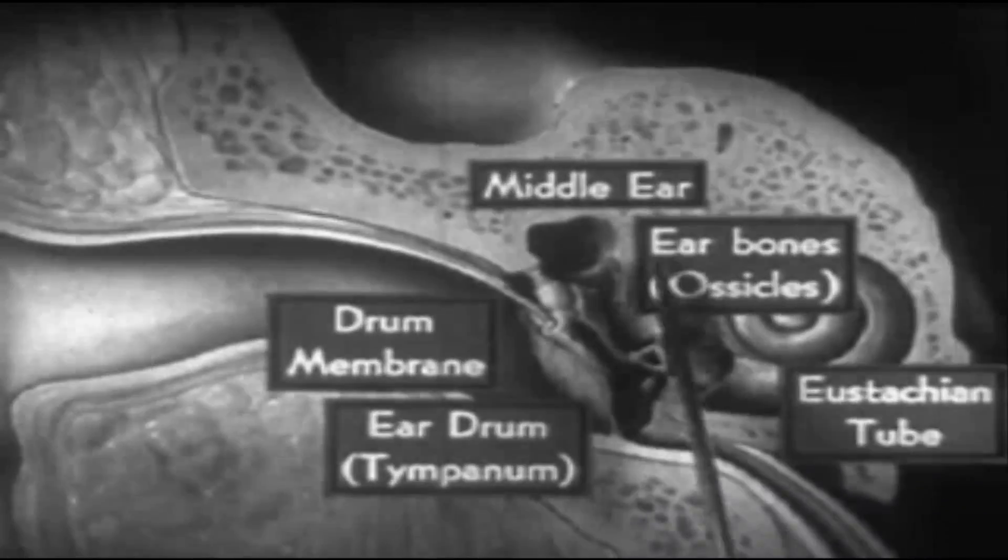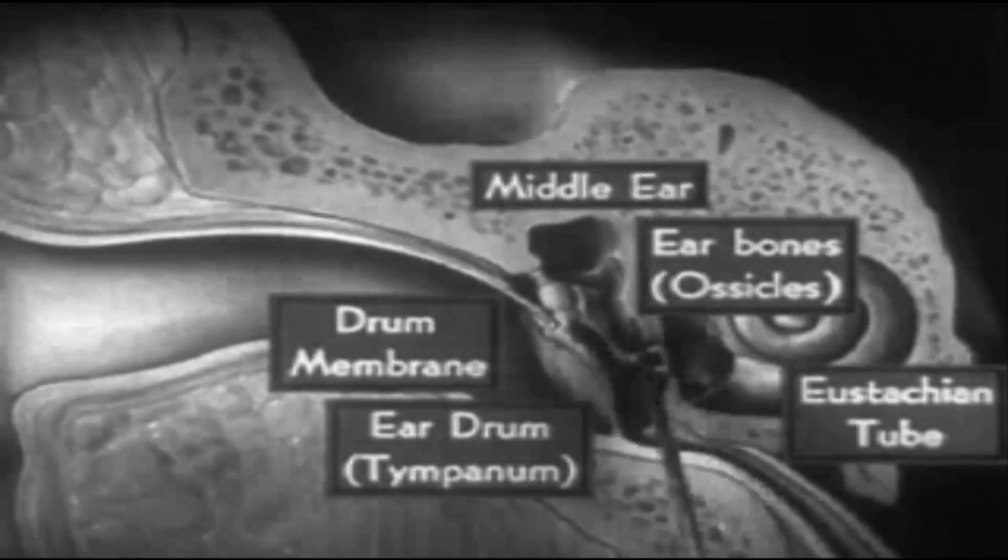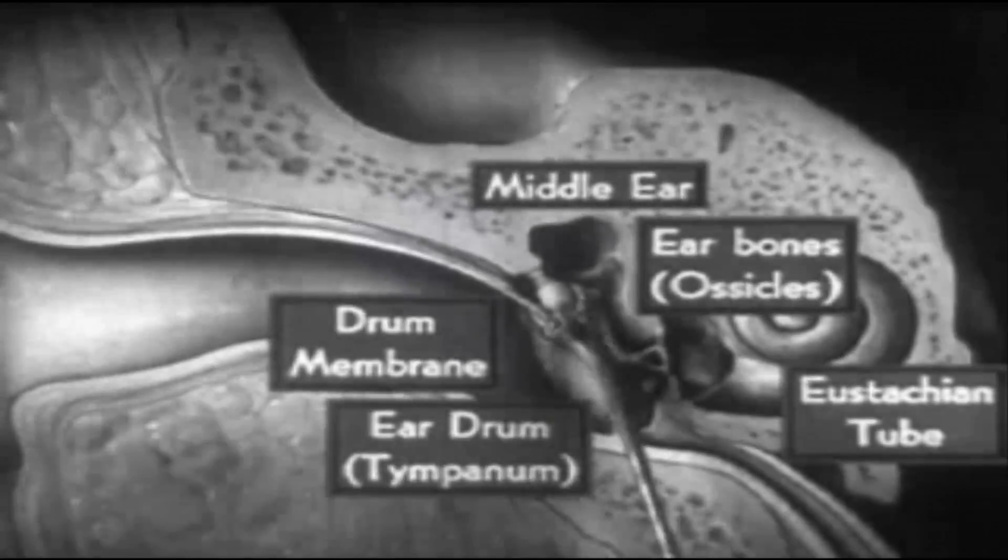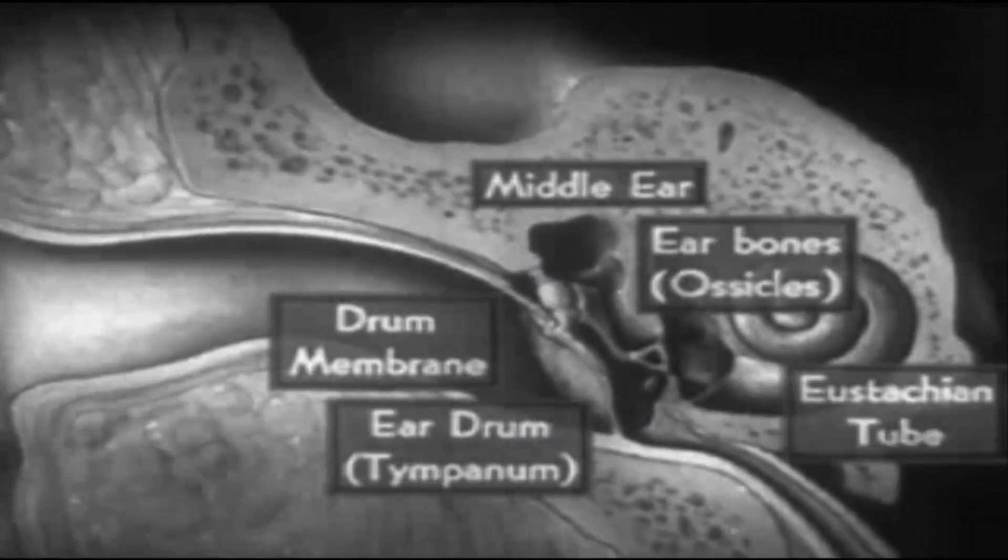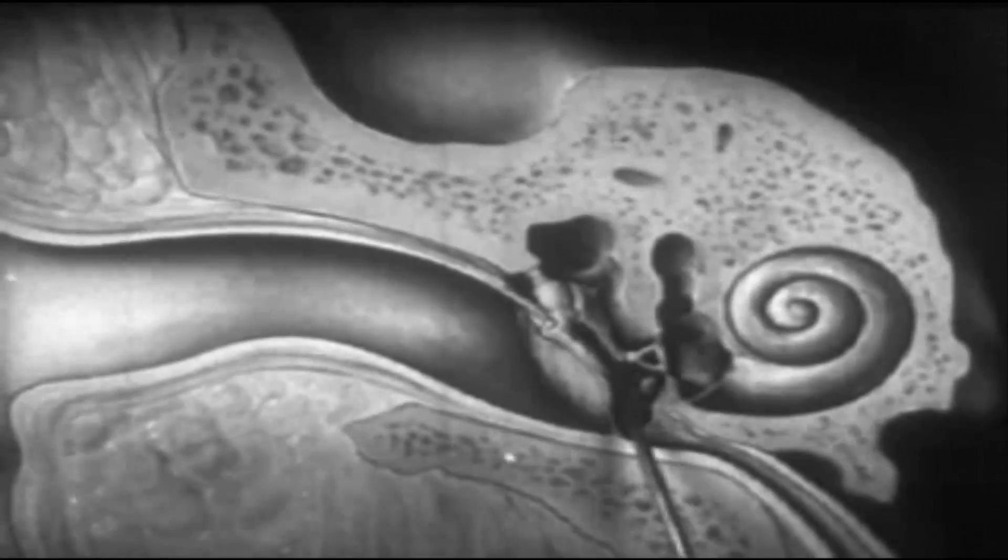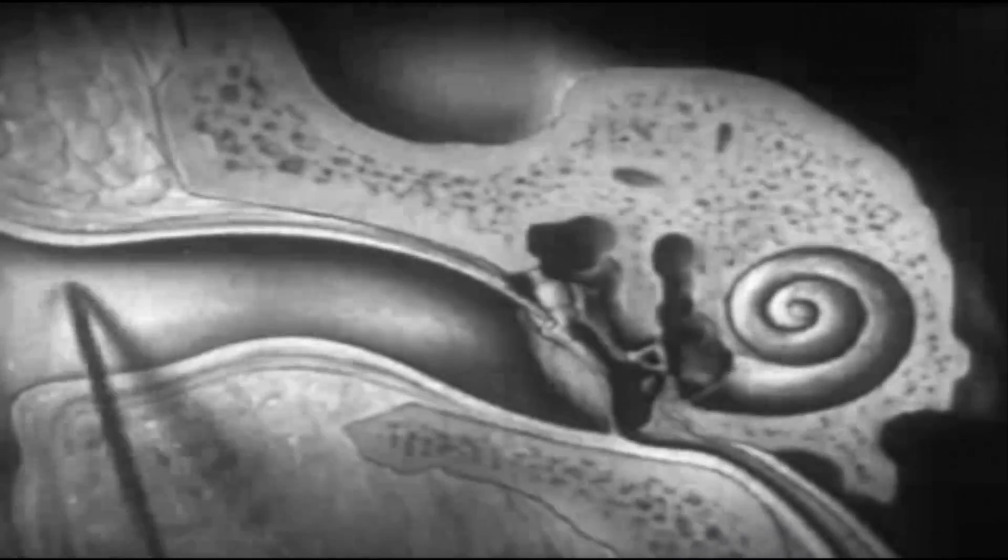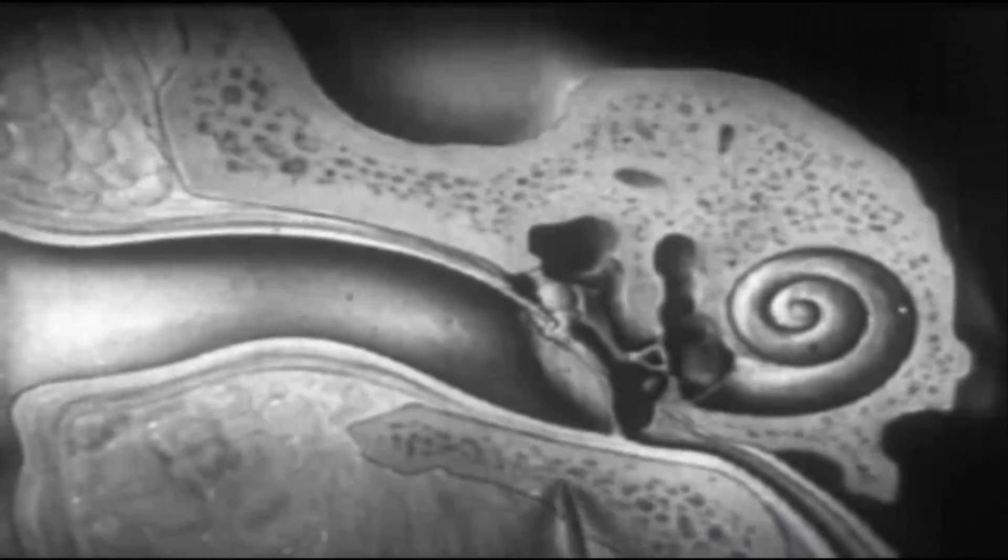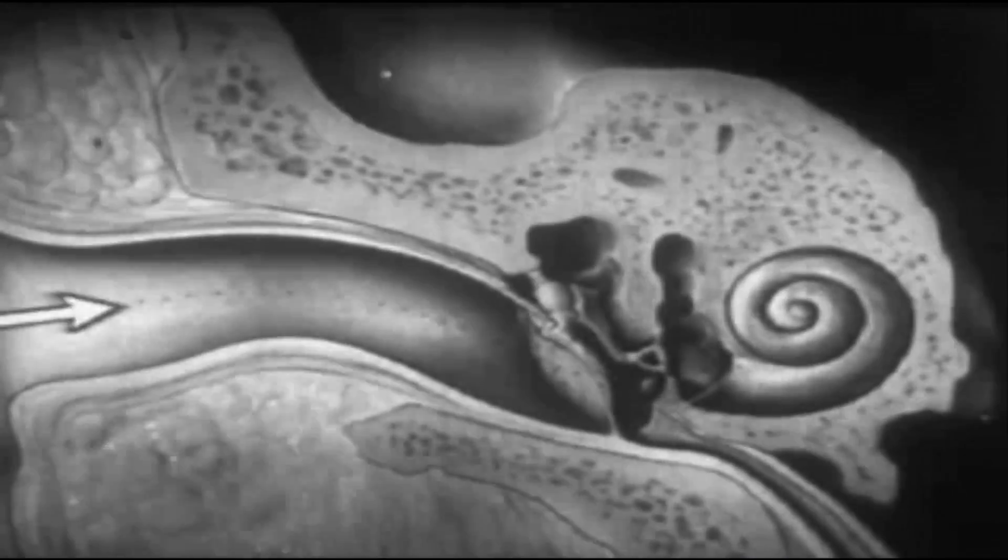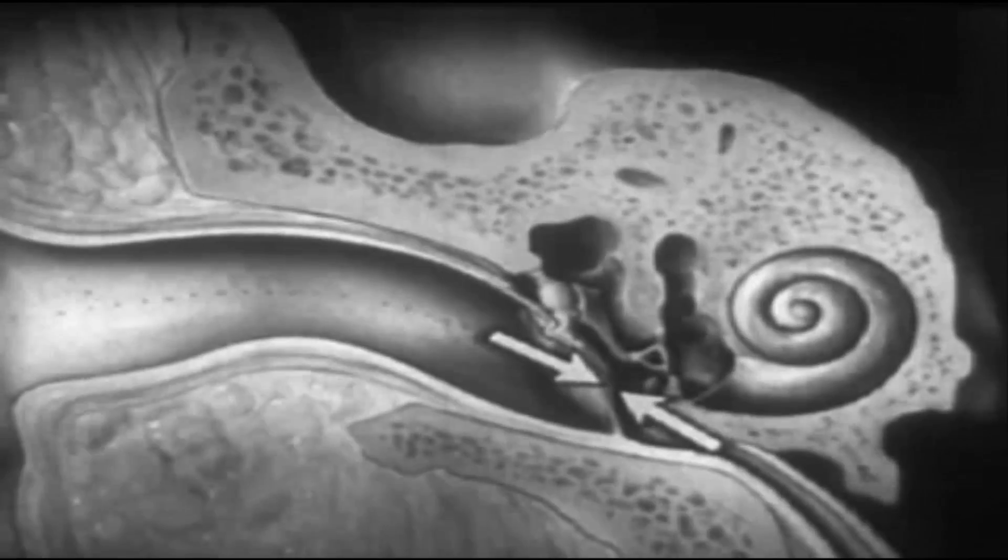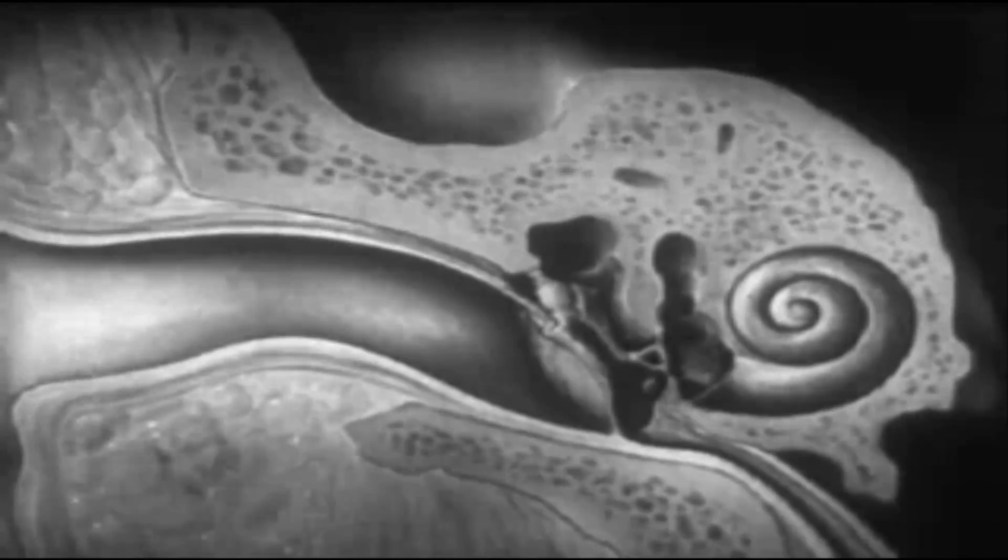The most striking feature of the middle ear are these three tiny but delicately fashioned bones. They're called the ear bones or ossicles. Like the outer ear, the middle ear contains air. It is the purpose of the Eustachian tube to equalize the air pressure on both sides of the drum membrane, to prevent its being injured by violent noises or changes in air pressure.